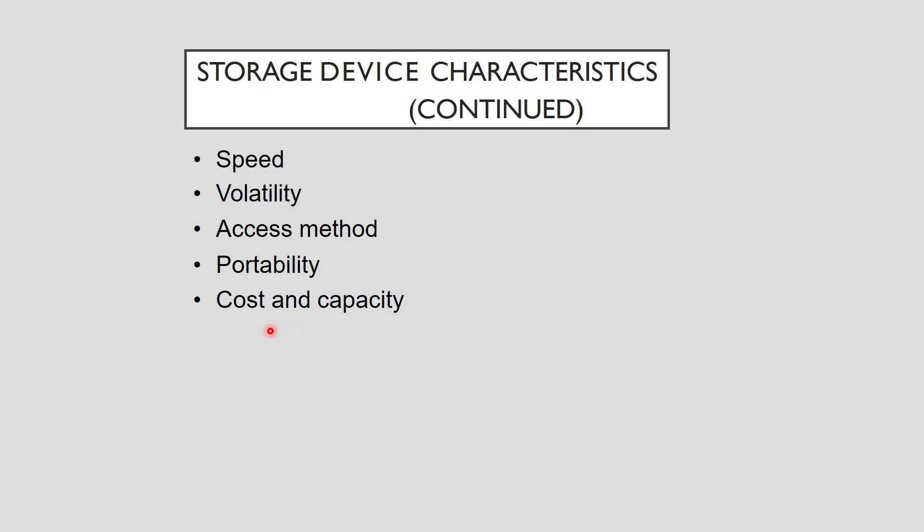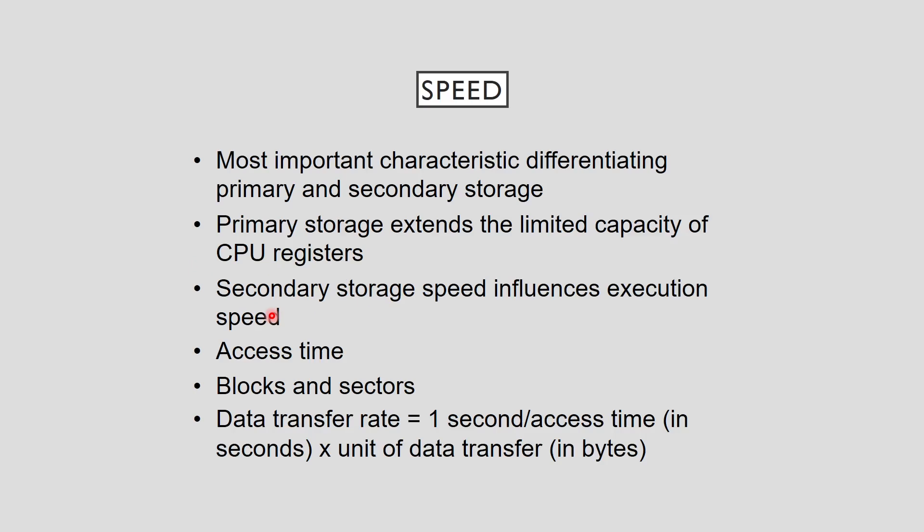A computer system has a variety of storage devices, each offering a cost-effective solution to a particular storage requirement. Speed is the most important characteristic differentiating primary and secondary storage. It is essential because the CPU must be continuously supplied with instructions and data. For example, a CPU with a one gigahertz clock rate needs a new instruction and supporting data every nanosecond.